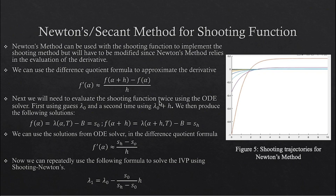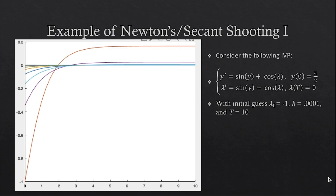The choice of h small or h big is the only trait that remains of the Newton's or secant method. So algebraically, the algorithm is the same. For this simulation, we will take the Newton's method direction using the following nonlinear system of equations. With our initial guess being negative 1, h being really small, and t being 10, we can see that we shoot from negative 1. Our first shot trajectory is actually really far from our target at 0. We can see how at each iteration the trajectories are getting closer and closer to our target, and eventually they converge.